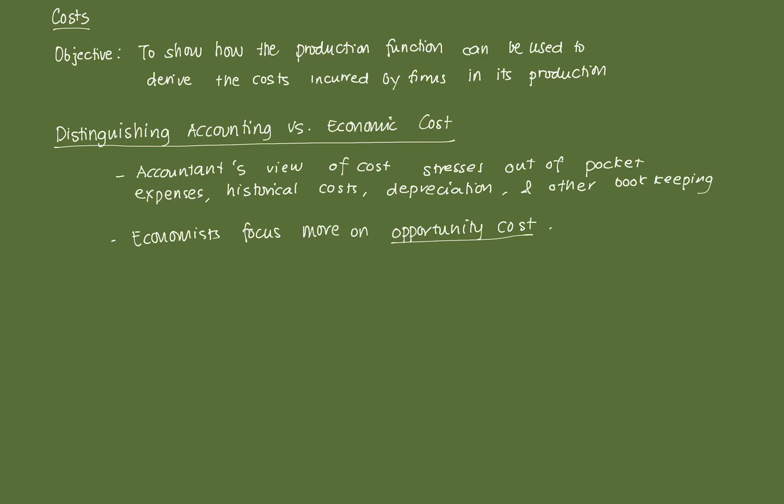For the first half of the theory of the firm, what we did was we built the foundations of the production function and analyzed that function in a short-run perspective and in a long-run perspective. We saw the differences between the two time spans and how the production function behaves as inputs are increased or decreased.